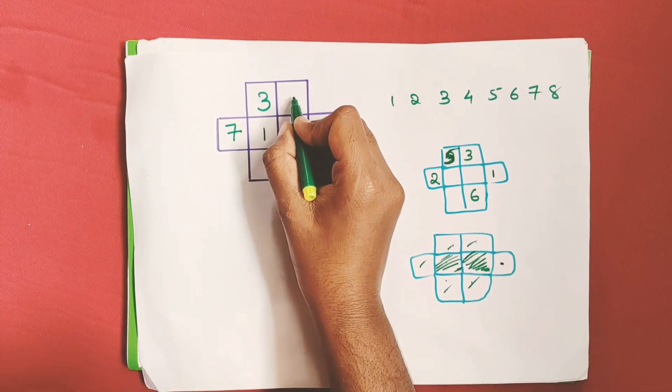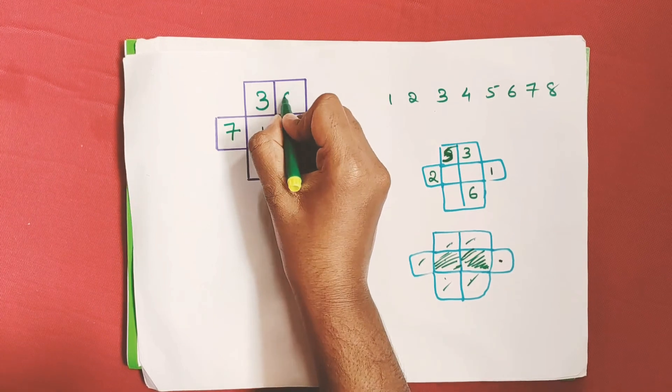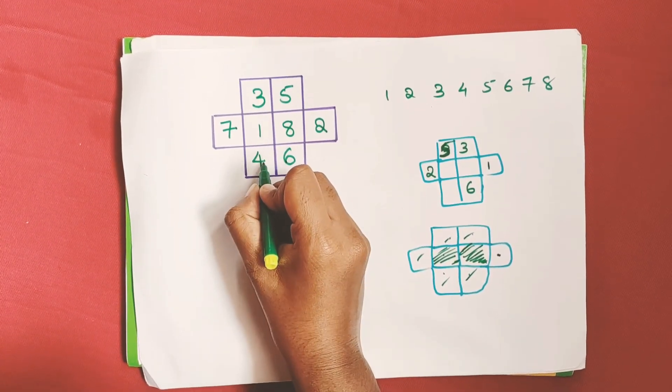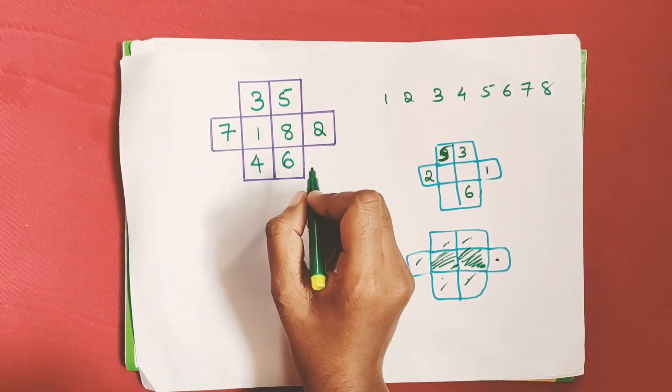4 goes here, 5 here, and 6 here. 6 can't be placed there because it's near to 7. So this is the solution.